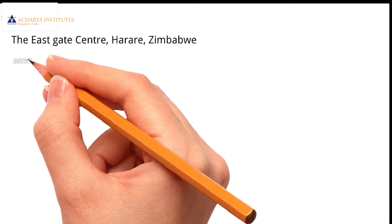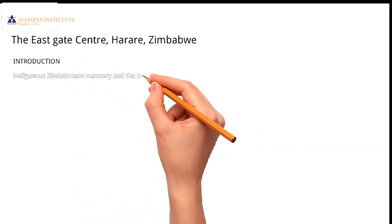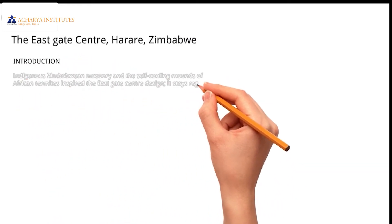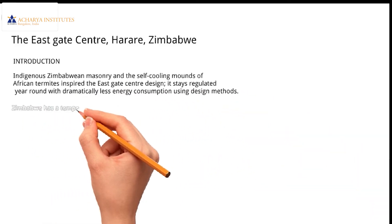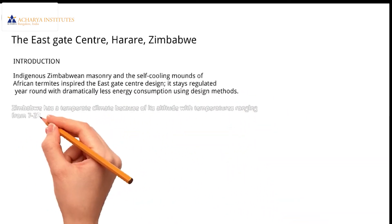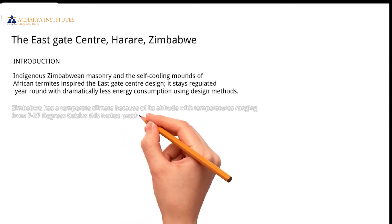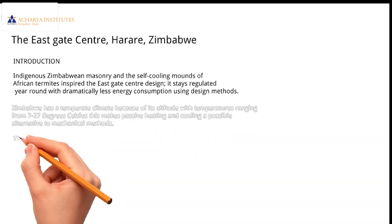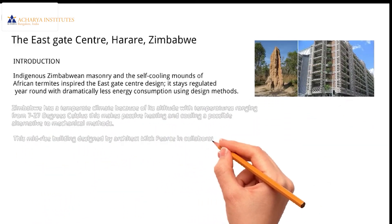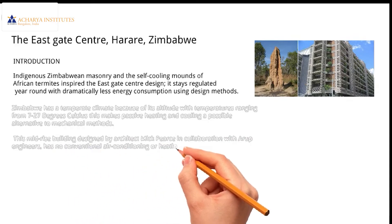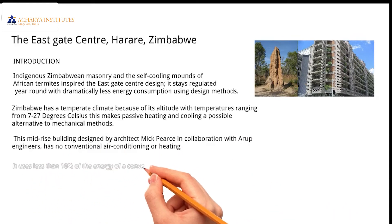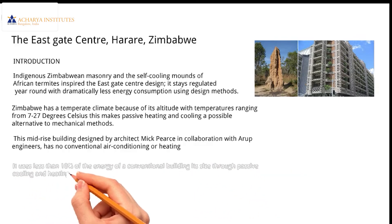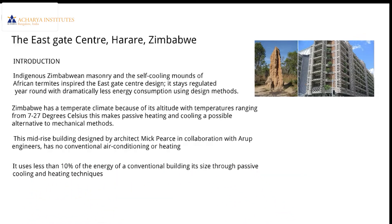Our next example would be East Gate Center, Harare, Zimbabwe. Indigenous Zimbabwe masonry and the self-cooling mounds of African termites inspired the East Gate Center design. It stays regulated year-round with dramatically less energy consumption using these design methods. Another striking feature of this building is it uses less than 10% of the energy of a conventional building of its size through passive cooling and heating techniques.